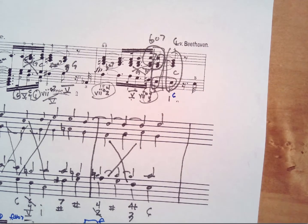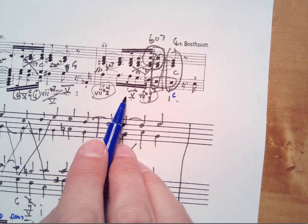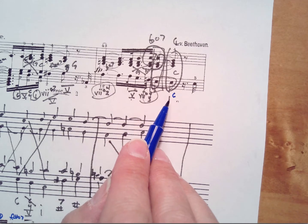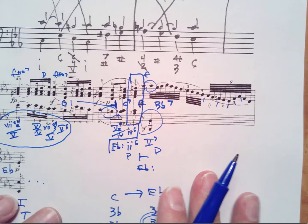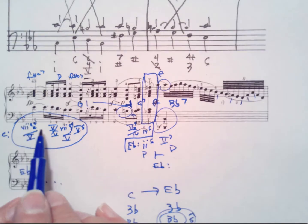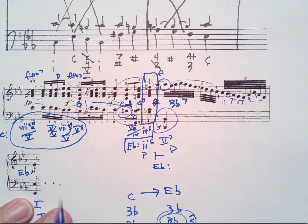I guess that's first inversion, isn't it? Seven diminished four-two, five, seven diminished four-three to one. And here, same thing. Seven diminished four-two, five, seven diminished four-three of five all going to five.